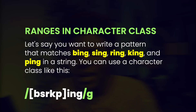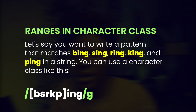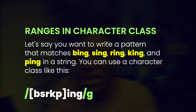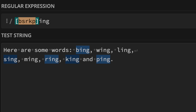Another thing with character classes is that you can also specify a range. Let's say you want to match bing, sing, ring, king, and ping. You can use a character set like [bsrkp] followed by ing. This would match bing, sing, ring, king, and ping.